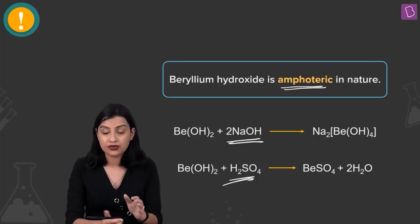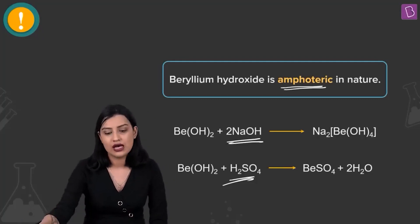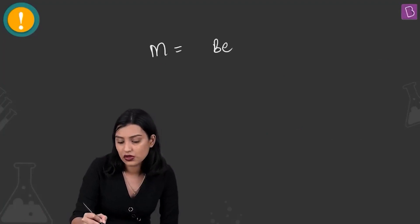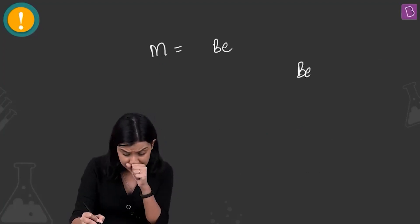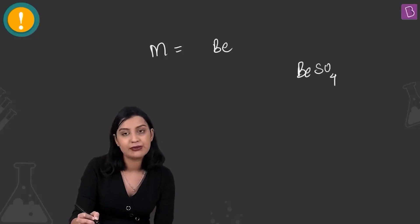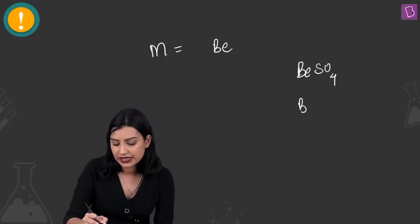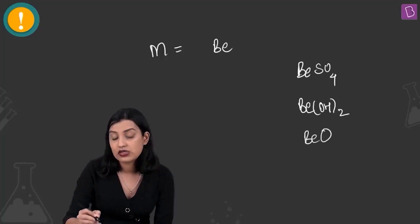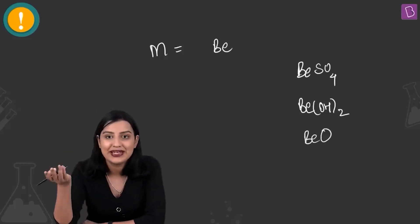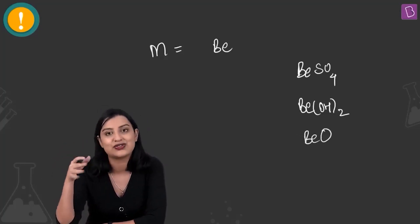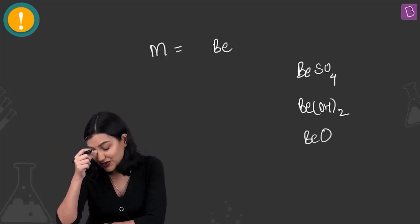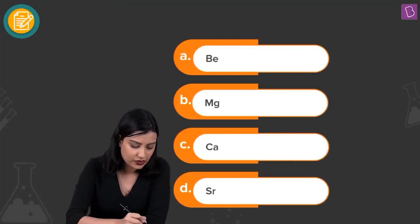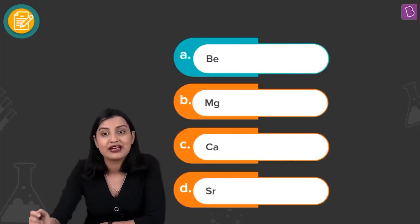So metal M is beryllium. The soluble sulfate is beryllium sulfate, the insoluble hydroxide is beryllium hydroxide, the oxide which becomes inert on heating is beryllium oxide, and the hydroxide is amphoteric. The answer is option A — beryllium.